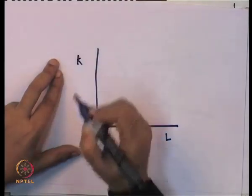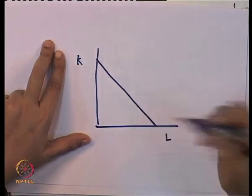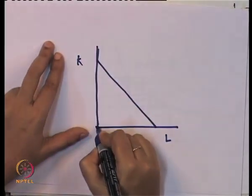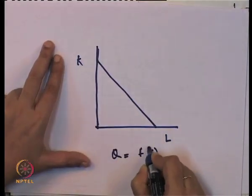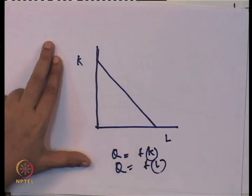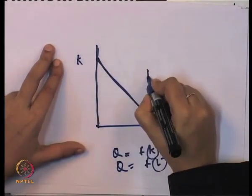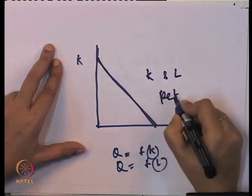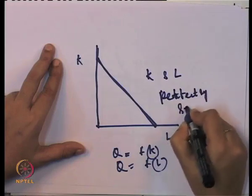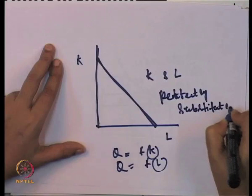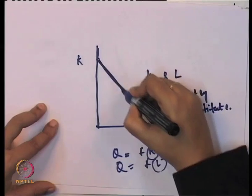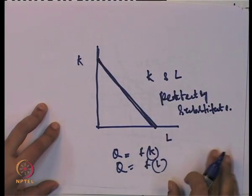In which case does the isoquant follow a different shape? If both inputs are perfectly substituted — taking labour and capital here — the isoquant would be a downward sloping straight line that touches both axes, because output Q can be produced only with capital or only with labour. So the isoquant takes this straight line shape if K and L are perfectly substituted, and it touches both axes because output can be produced with either capital or labour.